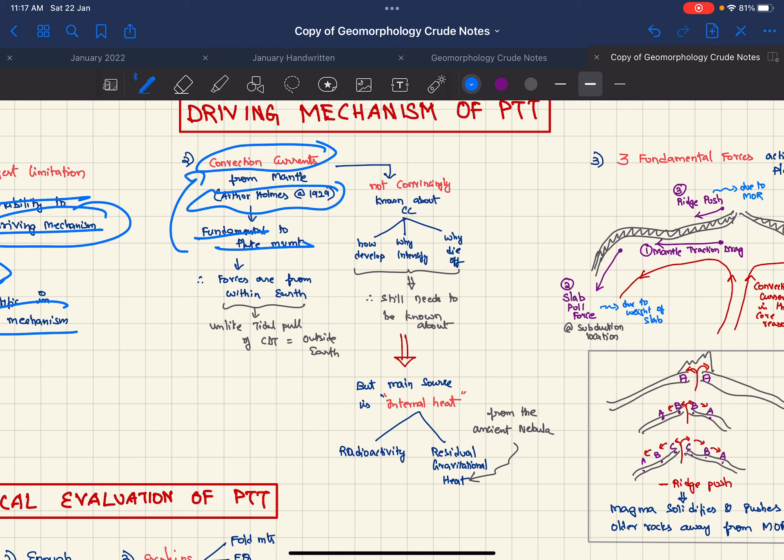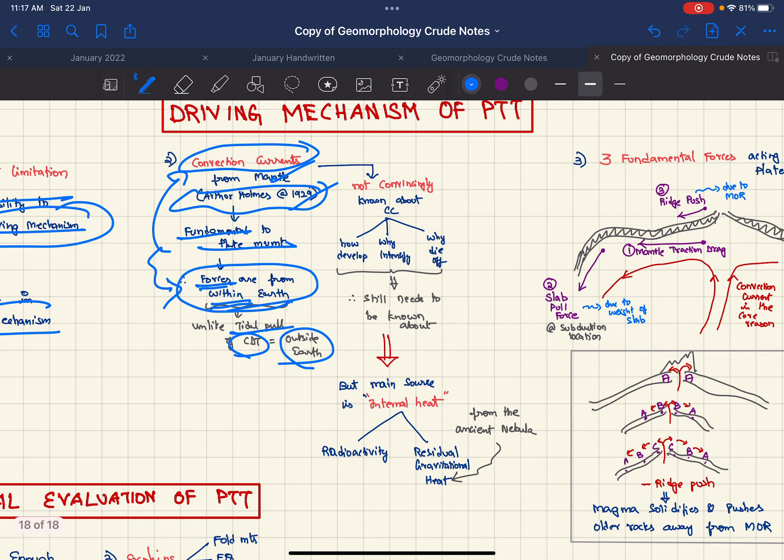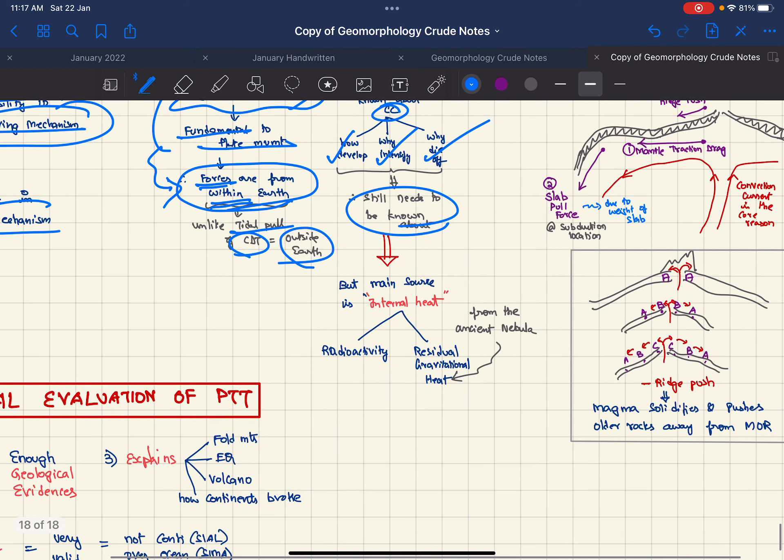These convection currents are sourced from the mantle. According to PTT, the force responsible for plate movements are forces from within the earth, whereas CDT talked about forces outside earth like tidal pull. But everything about convection currents is not known. This is one limitation of PTT - how the convection currents develop, why they intensify, why they die off still needs to be known. The main source of convection currents is internal heat from radioactivity and residual gravitational heat from the ancient nebula.